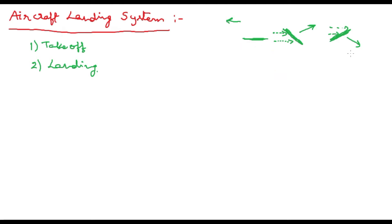Based on this airfoil concept, the aircraft works — similarly for takeoff and landing. In this problem, we will see how aircraft landing happens and what parameters we need to consider. Coming to the fuzzy logic controller, we need to take some inputs, process them, and produce an output. So identifying the inputs and outputs is our main job.